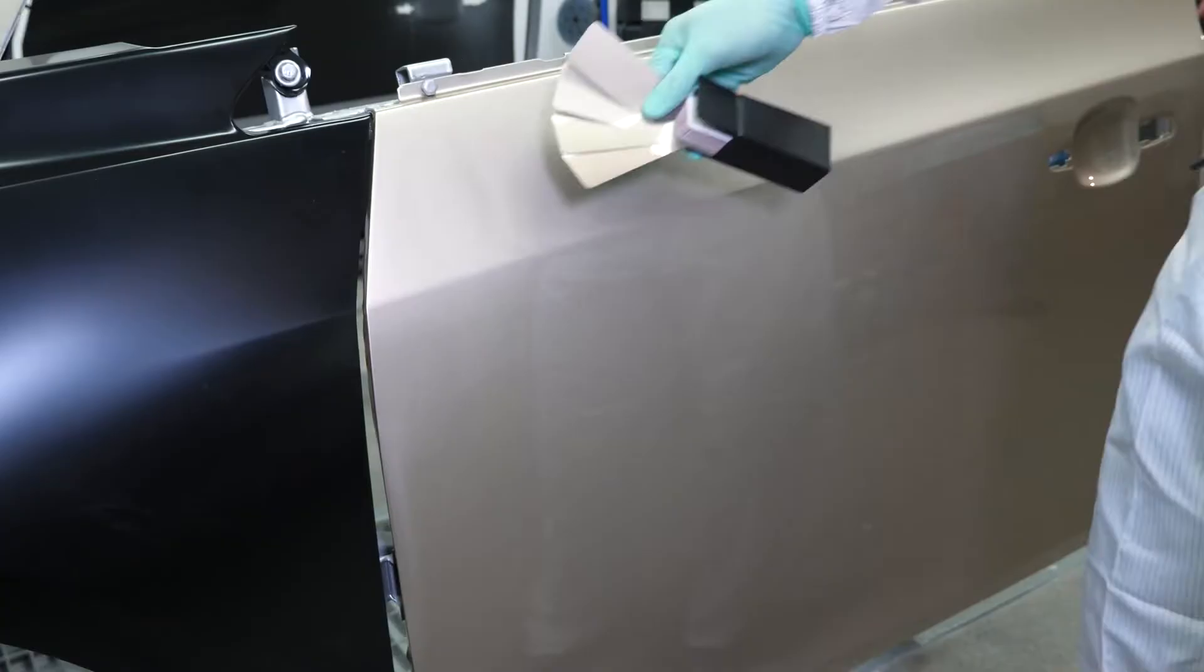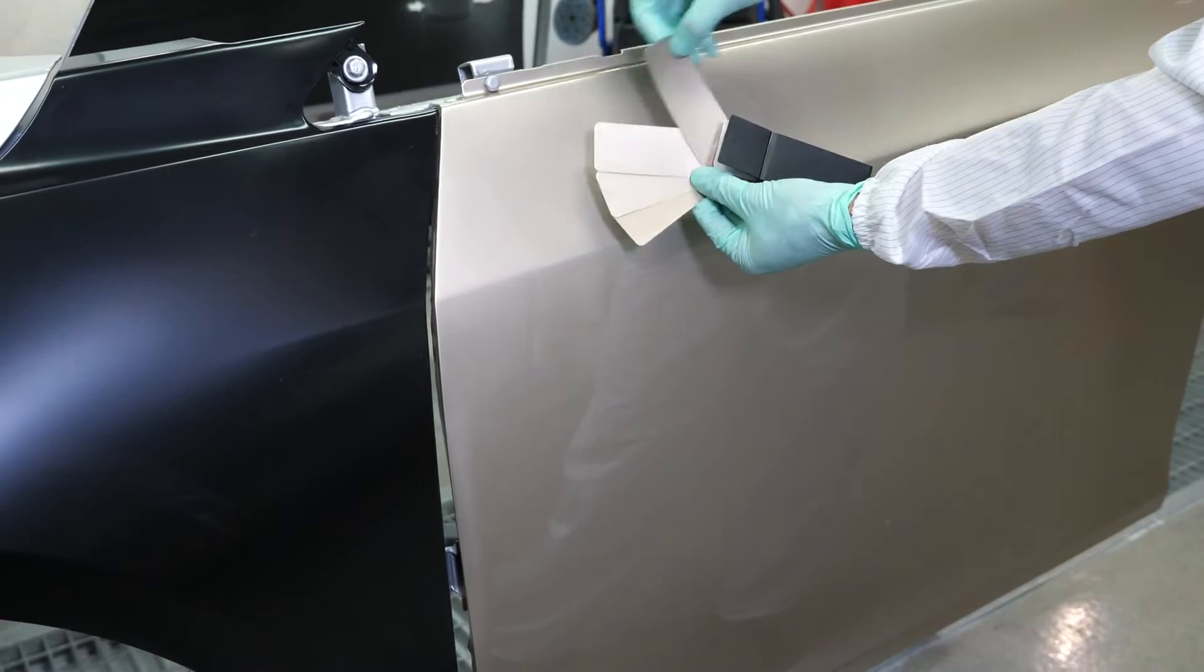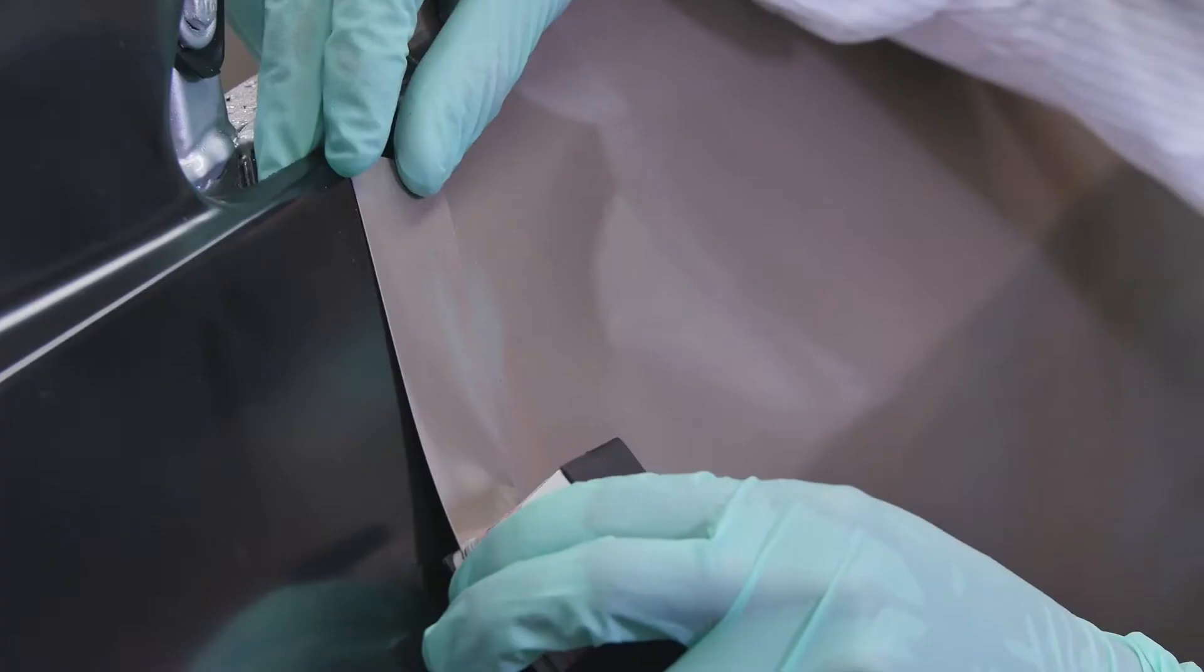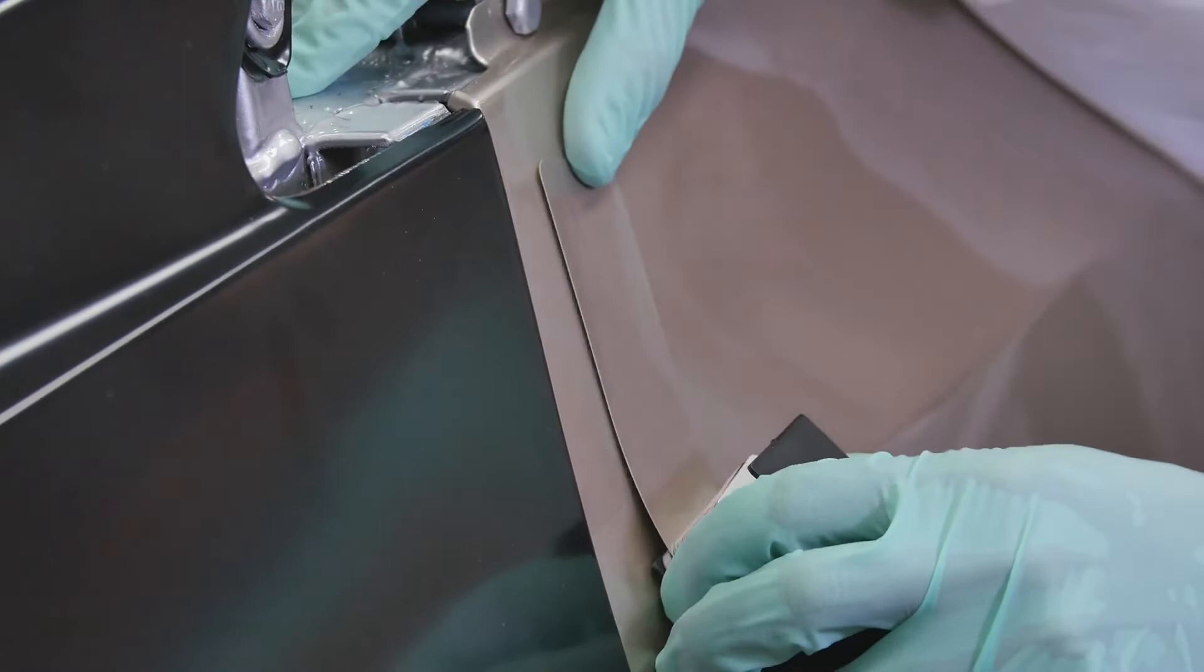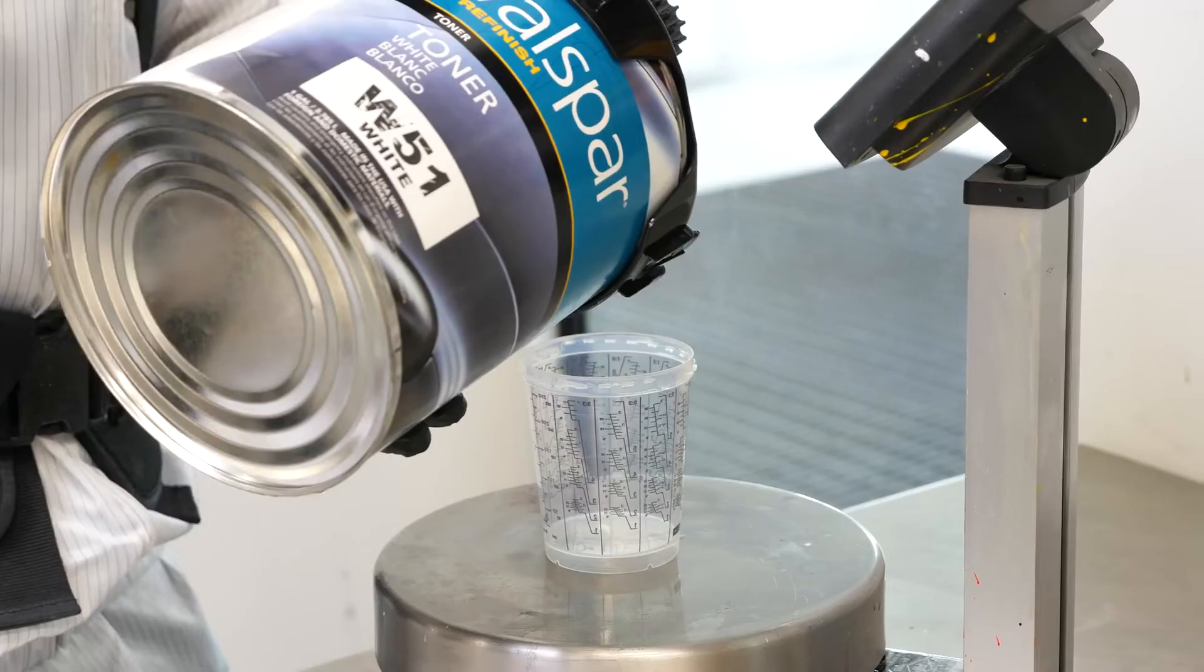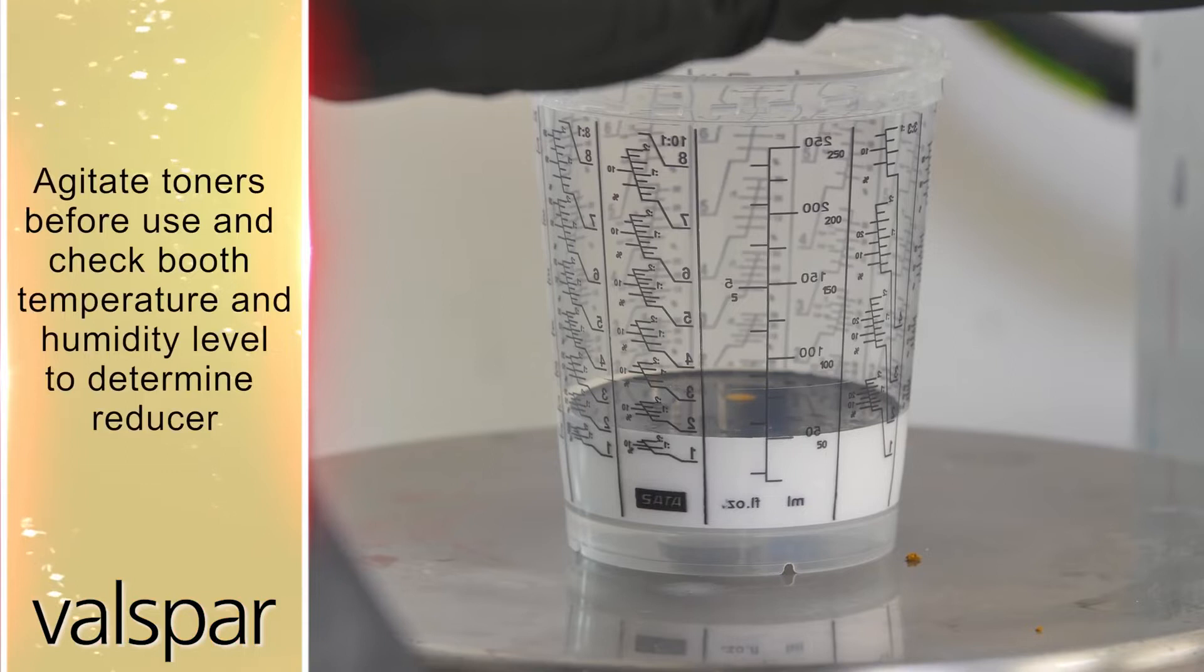First, we recommend determining the correct color variant. Do this before the job enters the booth. Use the color retrieval software, global color box, or spectrophotometer. With the correct color chip or variant, you are ready to mix the base coat.